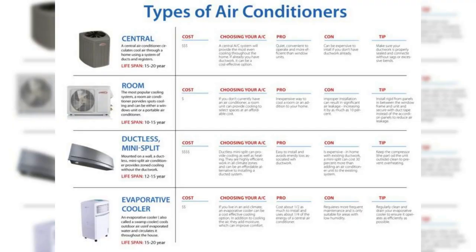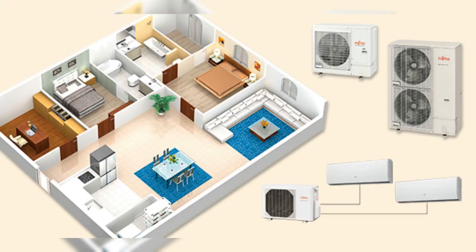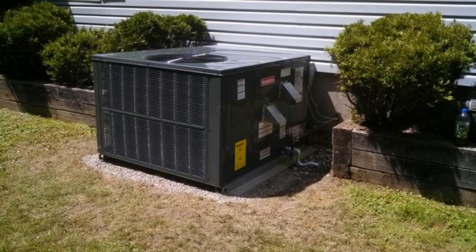Types of central air conditioners. There are several different types of central air conditioners, each with its own unique features and benefits. For example, some systems use a split system design, with the evaporator and compressor located in separate units. Other systems use a packaged unit, where all the components are housed in a single outdoor unit.